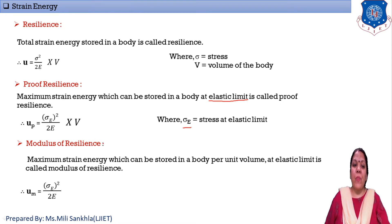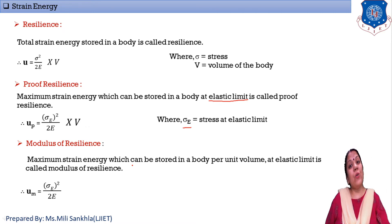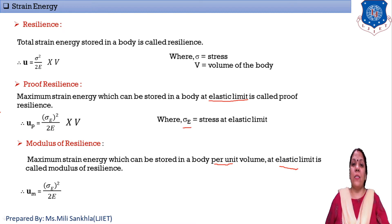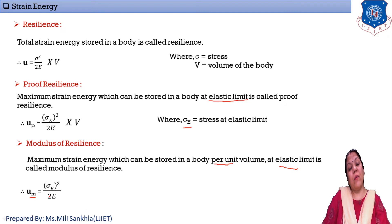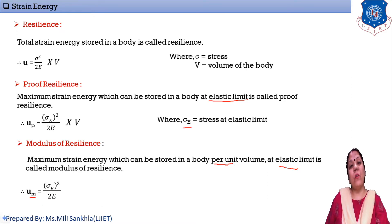σ_e is stress at the elastic limit and V is volume (area × length). The third definition is modulus of resilience: the maximum strain energy stored at the elastic limit per unit volume. Its equation is U_m = σ_e² / 2E, since dividing by volume cancels the volume term. Summary: resilience = total strain energy; proof resilience = maximum strain energy at elastic limit; modulus of resilience = maximum strain energy at elastic limit per unit volume.